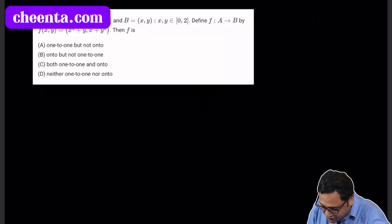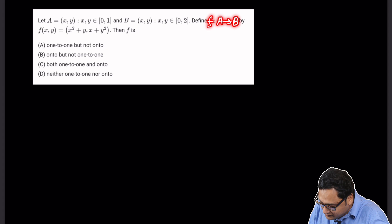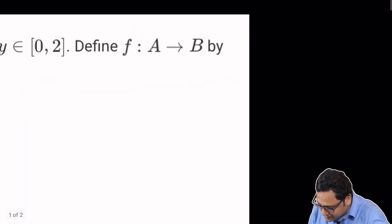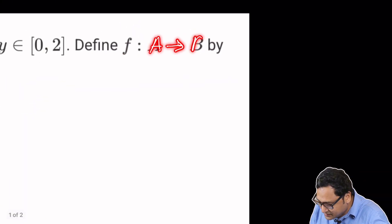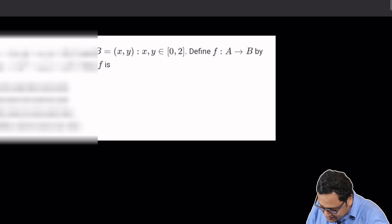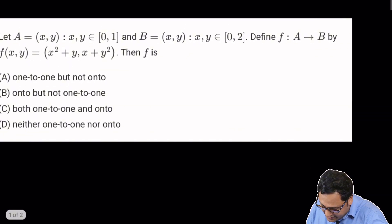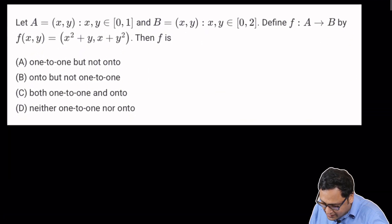So let's look at the problem. It says that we have a function f from A to B. A is a set, B is a set. And what kind of set is that? Well, A contains all the points x and y such that x, y is between 0 and 1.